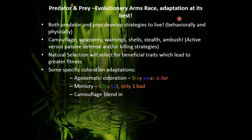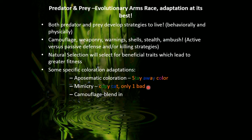Predator and prey are always trying to develop strategies to survive, either behavioral or physical. Some strategies include camouflage, weaponry, warnings, shells, ambush, and stealth — and natural selection will select for these beneficial traits. Specific ones include aposematic coloration and mimicry. Aposematic coloration is a stay-away color — a bright color that tells organisms the animal is poisonous or venomous. Mimicry is when one organism copies another because one has poison or venom, and the mimic wants others to think it does too. Camouflage is simply blending into the environment.